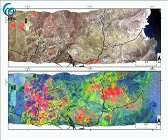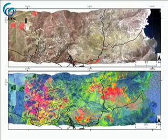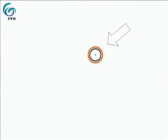Alunite appears purple, kaolinite red, illite in yellowish green tones, and unaltered rocks in blue. The area of interest is highlighted with concentric circles and a white arrow. In cases where the object is filmed from a distance, an angle symbol indicates the view direction.